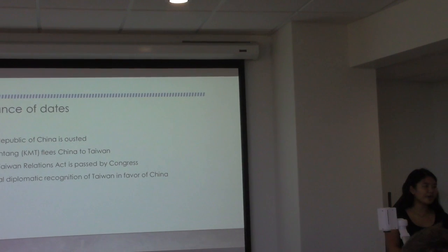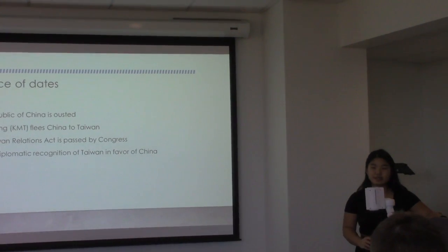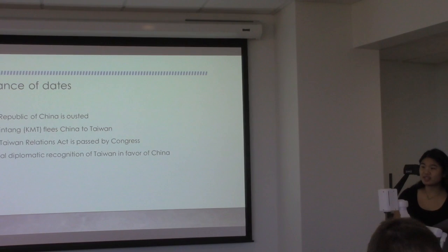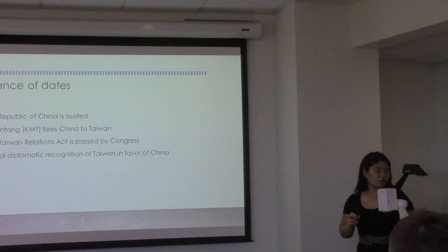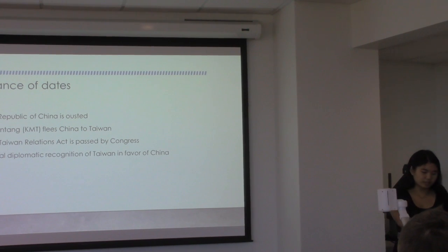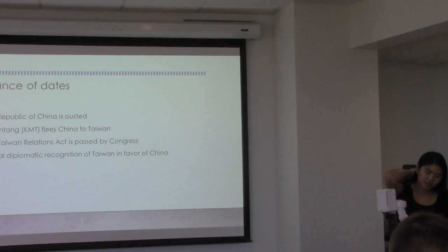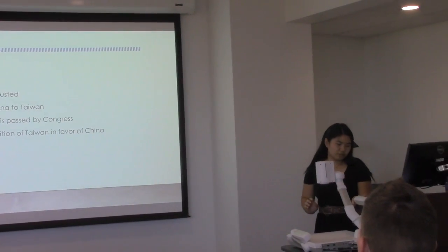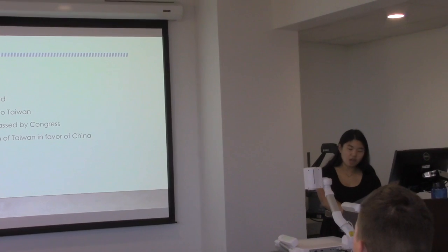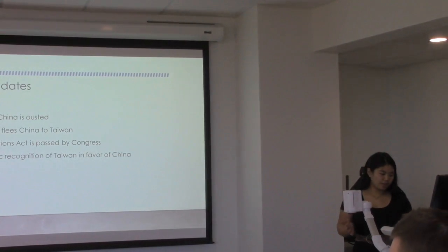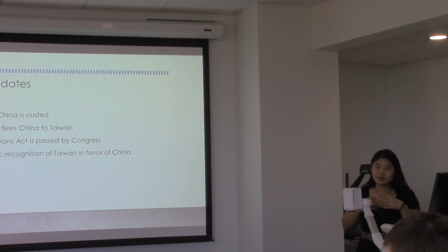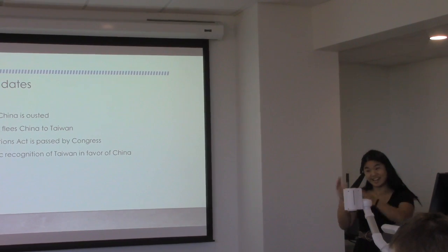The reason I chose the time period from 1949 to 1979 is because in 1949 the Republic of China was ousted from China itself and moved towards Taiwan as the People's Republic of China took control. In 1979 the Taiwan Relations Act was passed by Congress, signed into law by President Carter, effectively ending diplomatic recognition of Taiwan in favor of China. For clarification, I will refer to the Republic of China as Taiwan and the People's Republic of China as China.